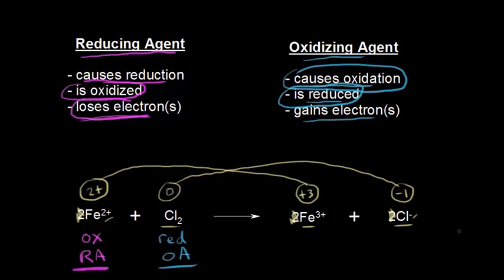That's how to think about redox reactions. If your oxidation states change, you can consider it to be a redox reaction. Once you look at those oxidation states, you can figure out what is oxidized and what is reduced, and which species is your oxidizing agent and which is your reducing agent.